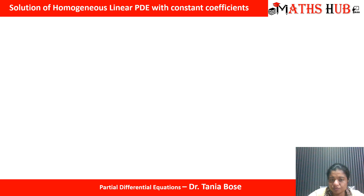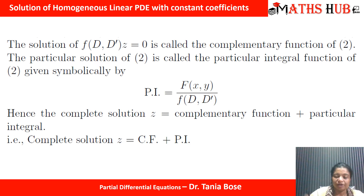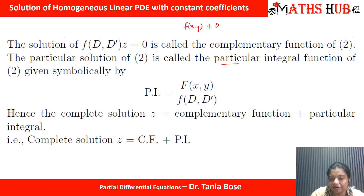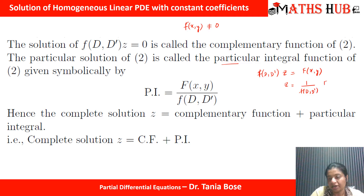To calculate the complementary function (CF), we put the right-hand side equal to zero and solve. The particular integral (PI) arises from the non-zero term F(x, y), and is calculated as z = (1/F(D, D')) · f(x, y).